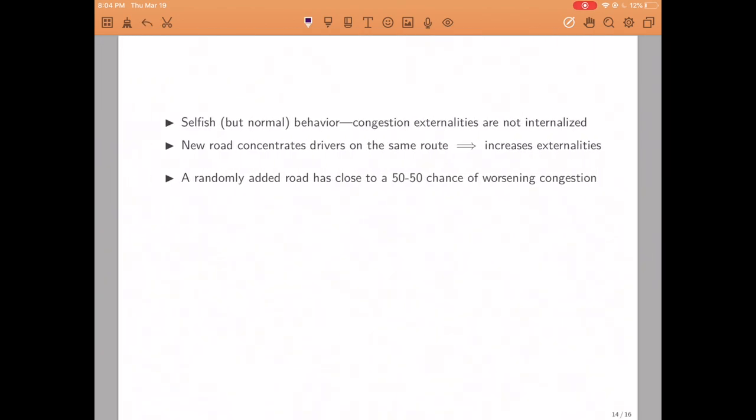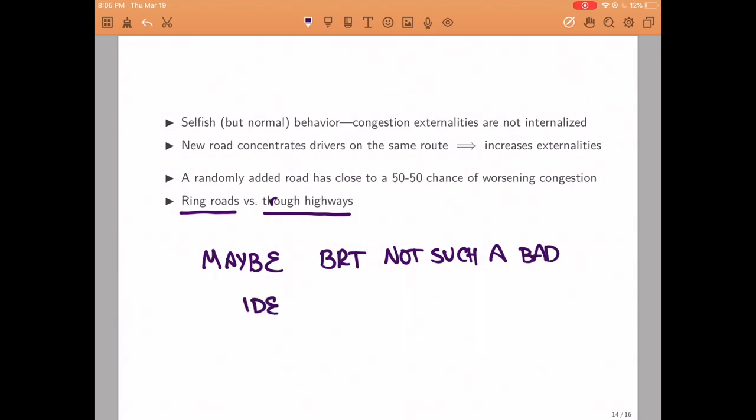Now, you might be concerned that the city that we have been looking at is a really simple city with really simple traffic patterns, and you might think that the result is driven by the specific characteristics of this city. But that's actually not true. If you generate that city at random with traffic needs at random and then you randomly add a road, you have about a 50-50 chance of making the traffic worse when you add this road. So this kind of Braes's paradox behavior is actually a lot more persistent than our intuition would tell us. And the idea that in general it's better to have ring roads than highways that go through the cities is actually quite general.